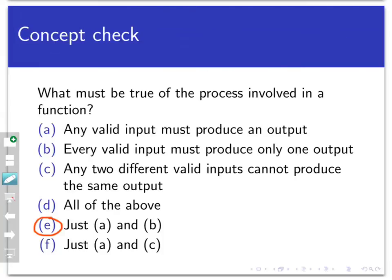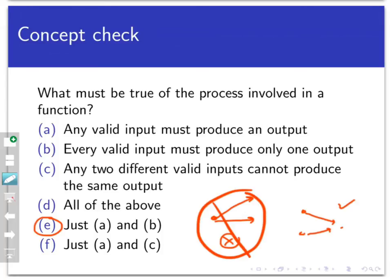The answer here is going to be E — both A and B have to be correct. Any valid input needs to produce something as an output. For example, in the vending machine model, if I put in a dollar bill with a valid code and did everything right, I'm supposed to get some output — a machine that gave no output for a valid input would be considered broken. Also, every valid input needs to produce only one output. If I put in my dollar bill and a correct code, I should get one candy bar, not two. However, it is possible for two different inputs to get sent to the same output — that is acceptable.